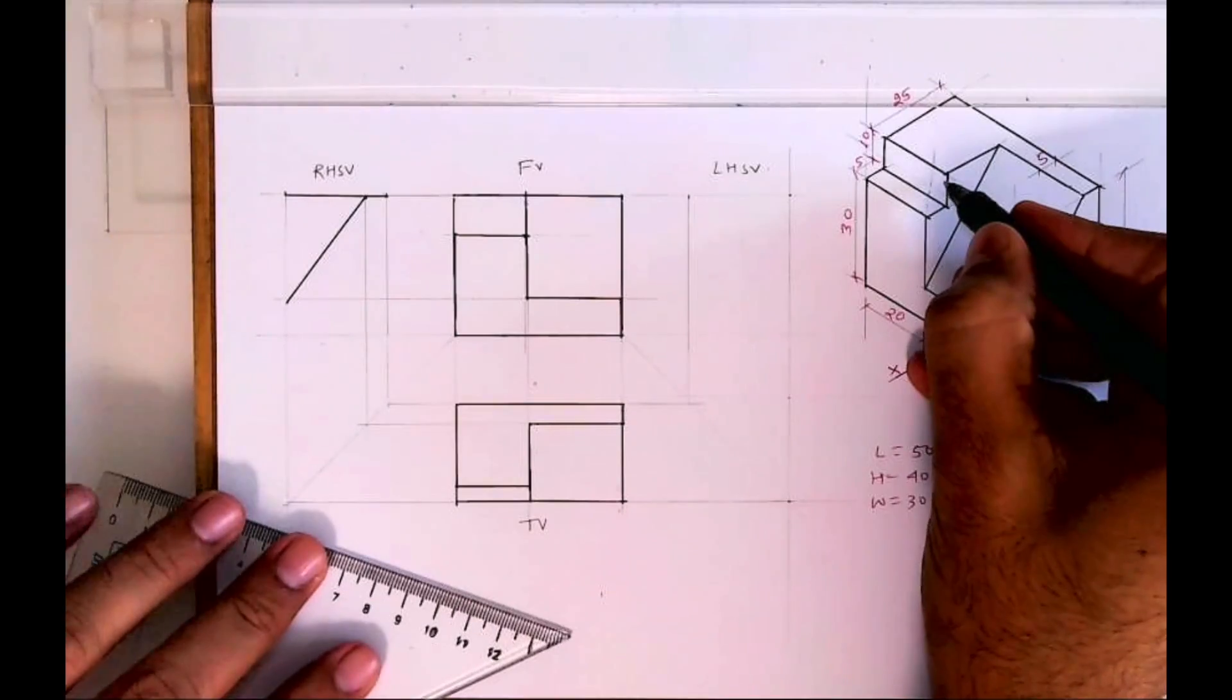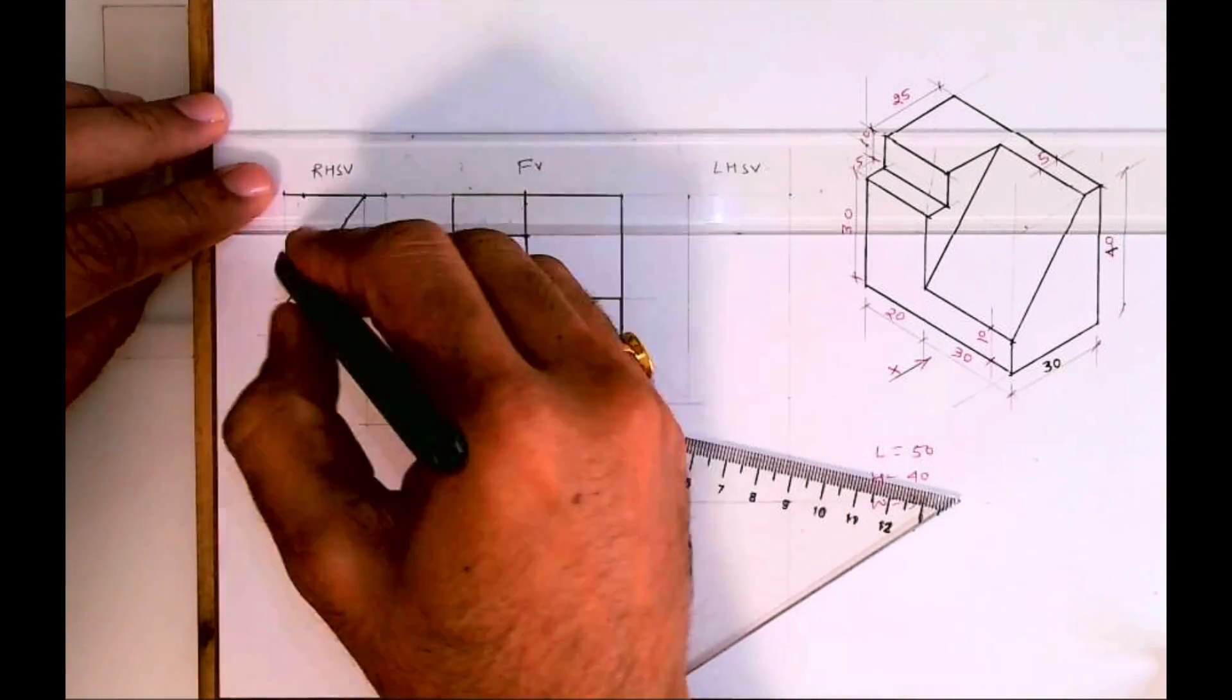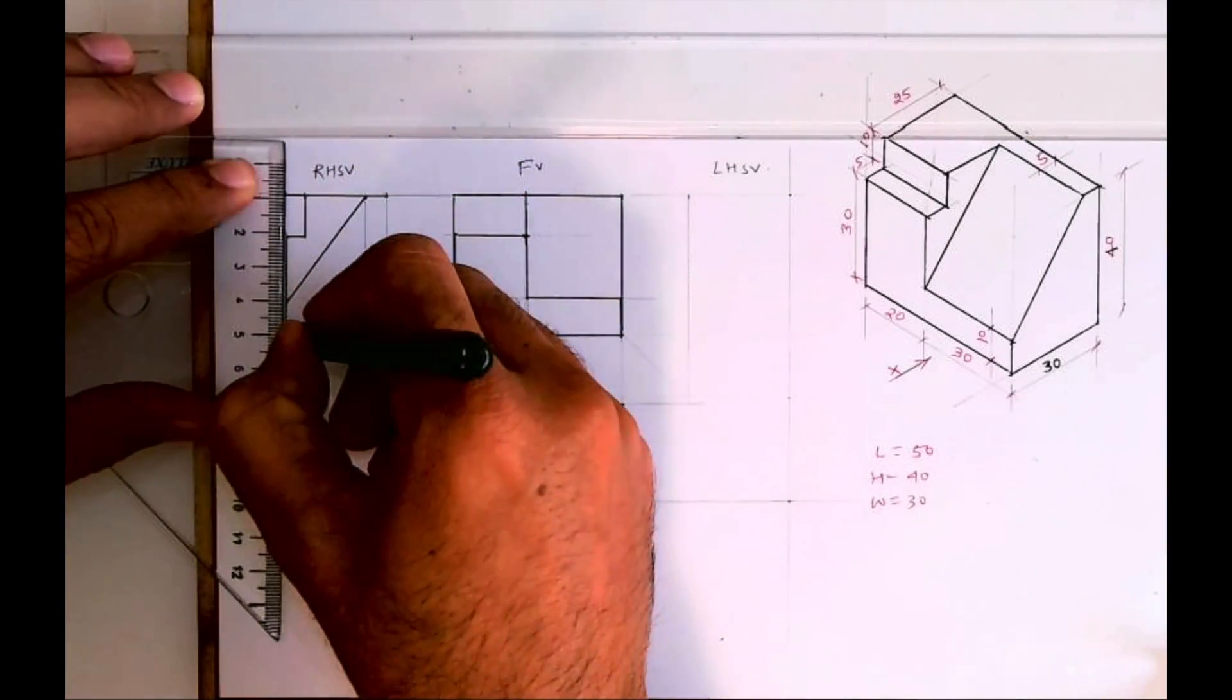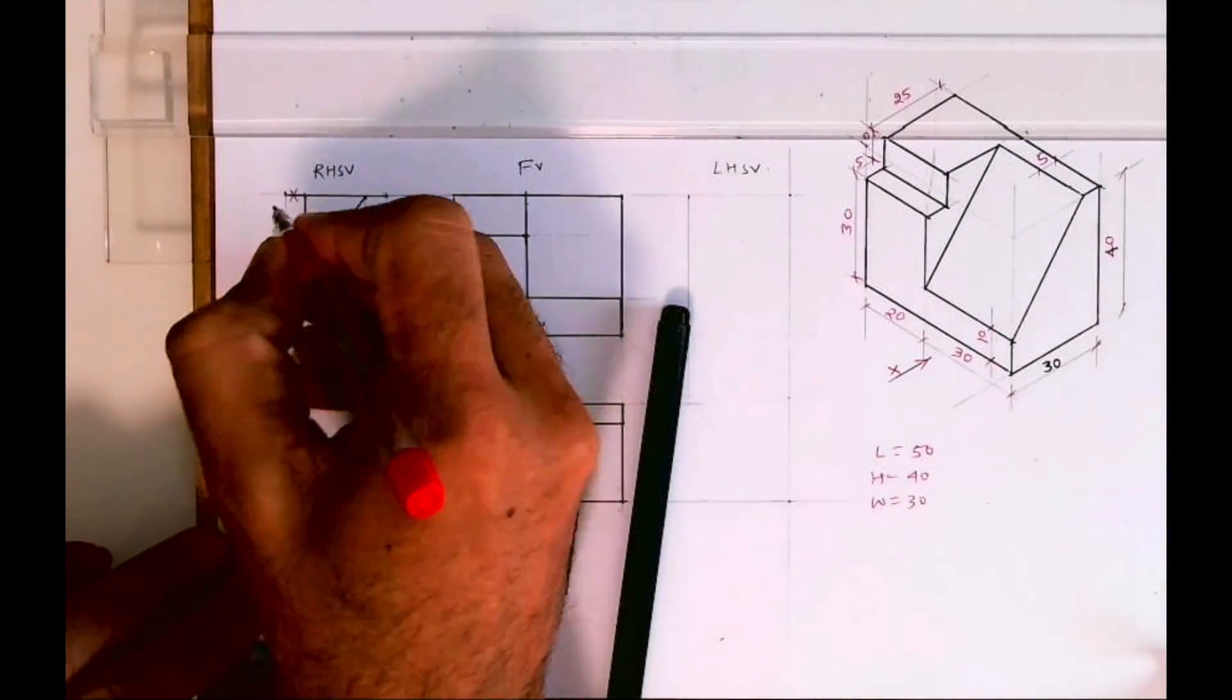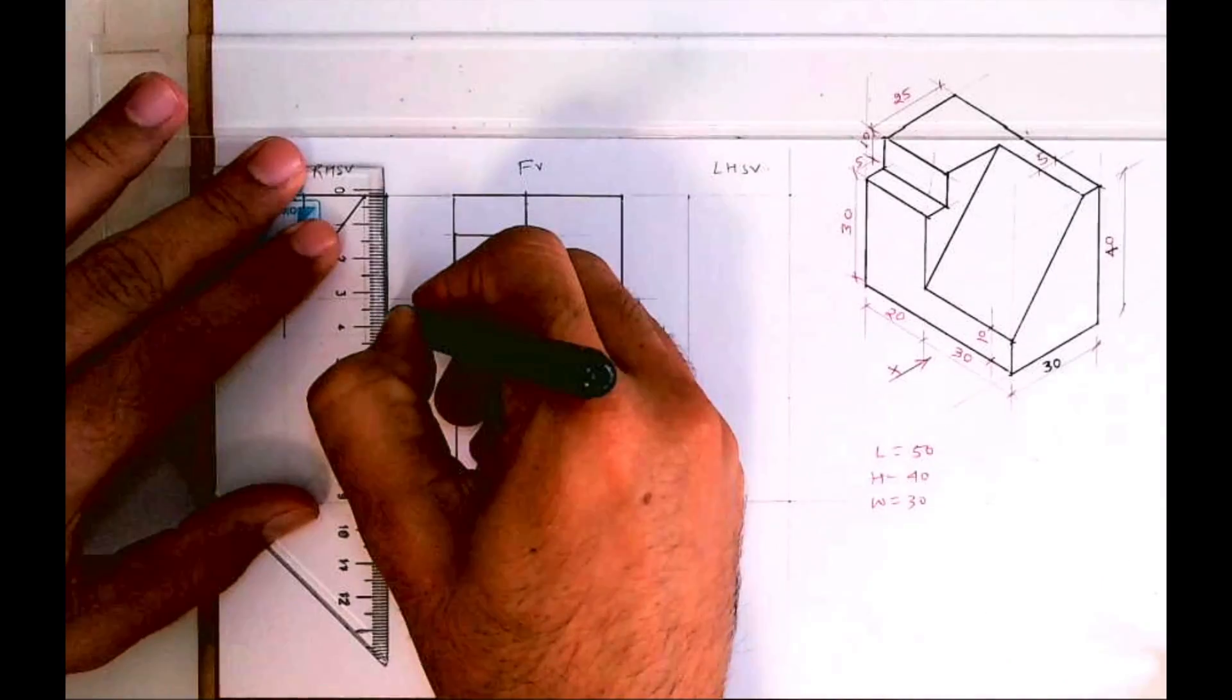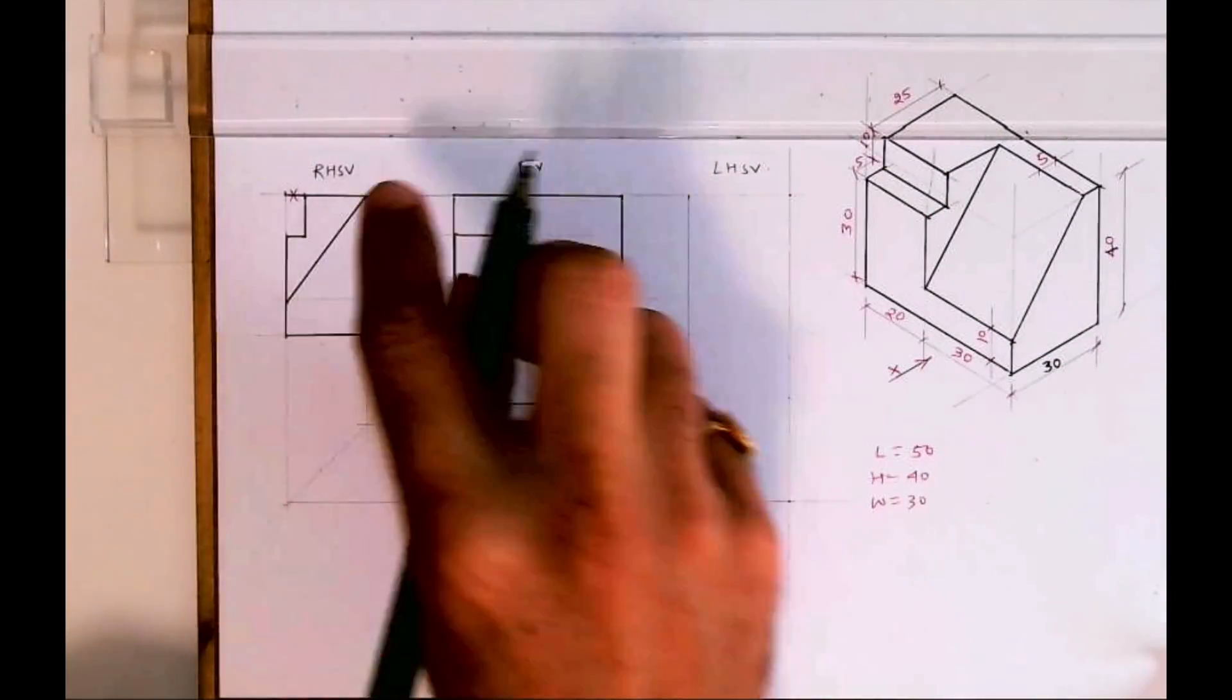Now see, this is only to the 25. By mistake I have extended till full, so ignore that. You take 5 mm from here and you draw like this. So this is the correct one, ignore this small line. It is like this. So we are done with right hand side view.